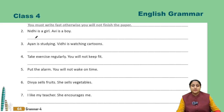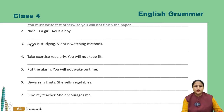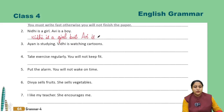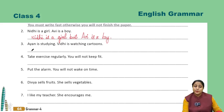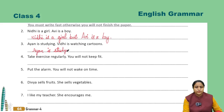Second sentence: Nidhi is a girl, Avie is a boy. Next sentence: Ayan is studying, Vidhi is watching cartoons. Iska answer: Ayan is studying and Vidhi is watching cartoons — Ayan par raha hai aur Vidhi cartoons dekh rahi hai.